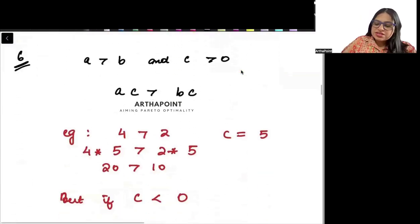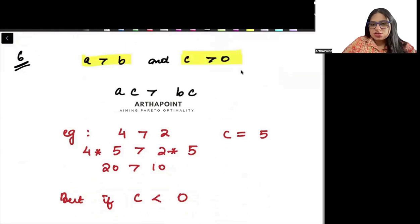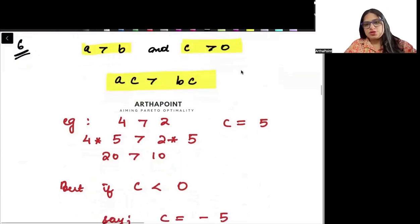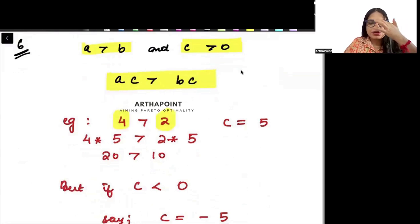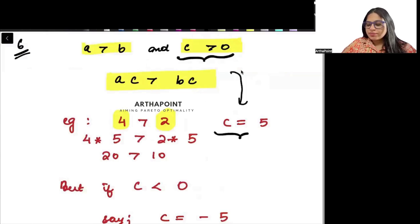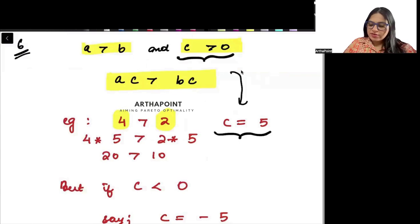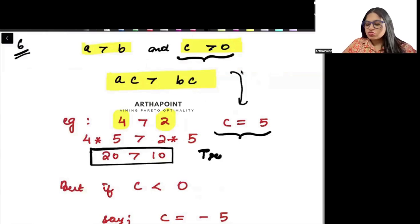Next rule: if A is greater than B and C is positive, then A into C will be greater than B into C. Example: A is 4, B is 2 — so 4 is greater than 2. C is positive, say 5. Multiplying 5 on both sides gives 20 greater than 10, which is true.